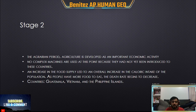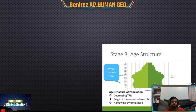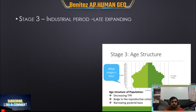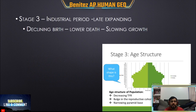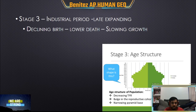In stage three, countries begin to use machines. People are becoming more educated, more people are focusing on getting jobs, and women are starting to get more opportunities — such as education and access to birth control. Stage three is known as the period of industrialization.